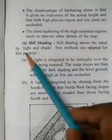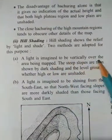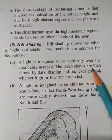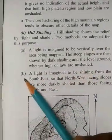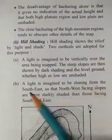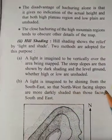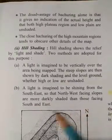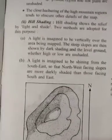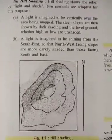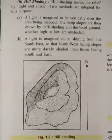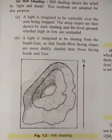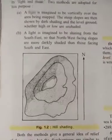Hill shading shows the relief by light and shade; two methods are adopted. In the first method, light is imagined to be vertical over the area being mapped. The steep slopes are then shown by dark shading and the level ground, whether high or low, is unshaded. In the second method, light is imagined to be shining from the southeast, so that northwest-facing slopes are more darkly shaded than those facing south and east. You can see hill shading in this picture. Both methods give a general idea of the relief of the country, but the disadvantage is that hill shading does not give any idea of actual height, and it is difficult to know whether a piece of land slopes uphill or downhill.